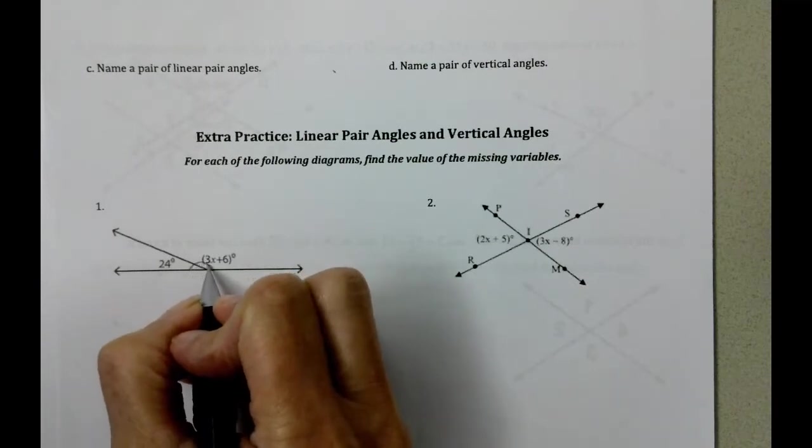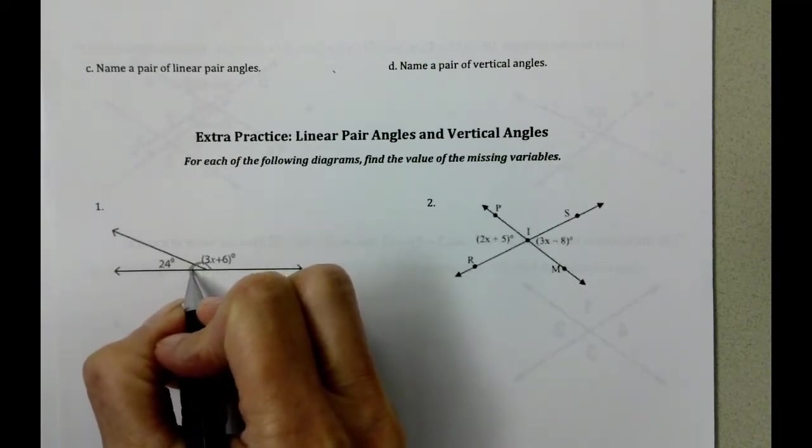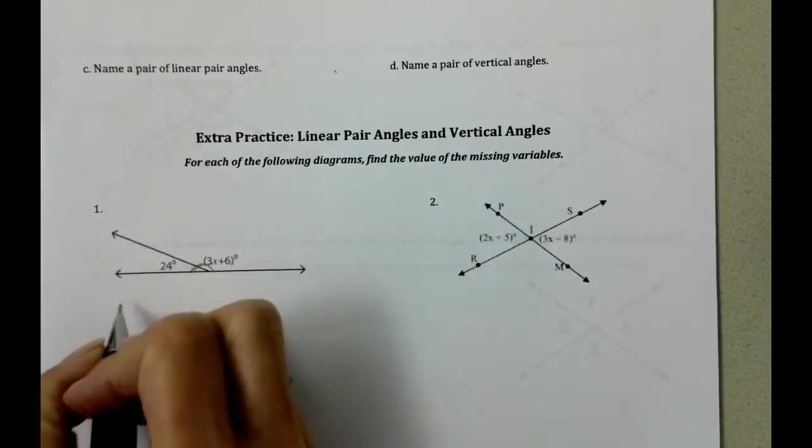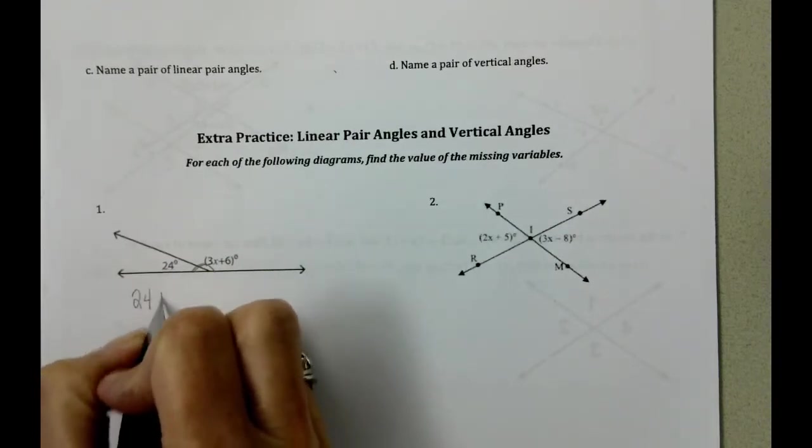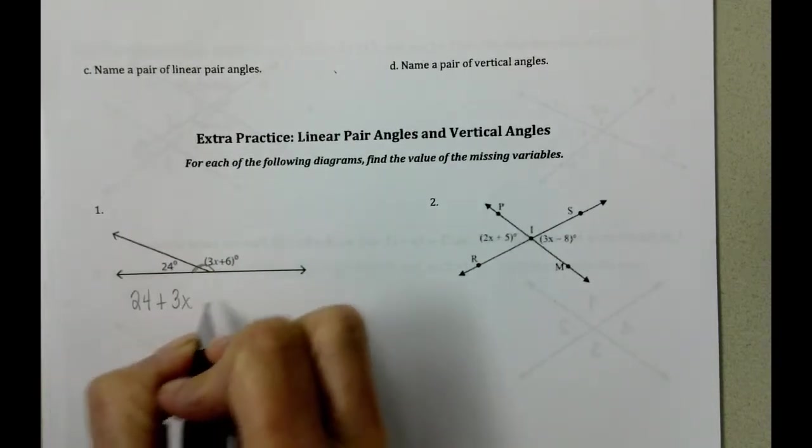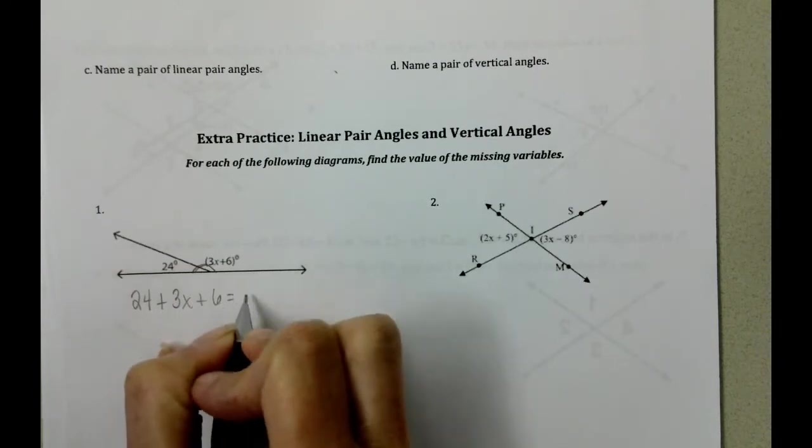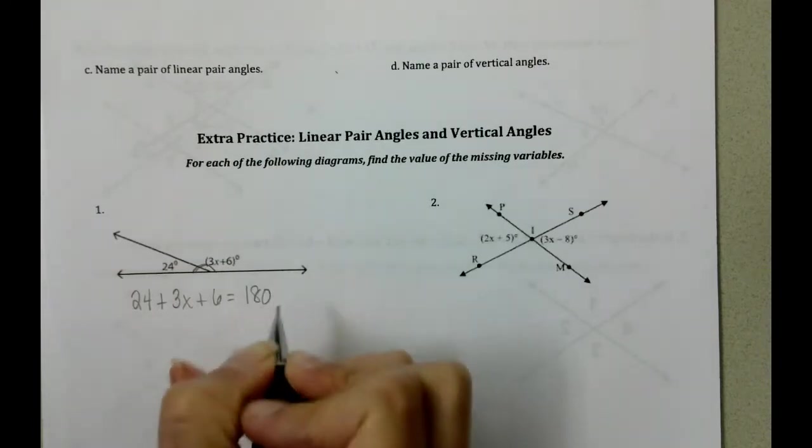And if you recall, what happens with the linear pair is we take the two angles and we add them up. When we add them up, we get 180 degrees.